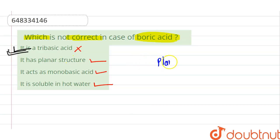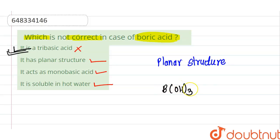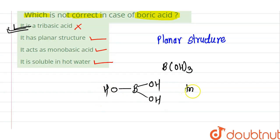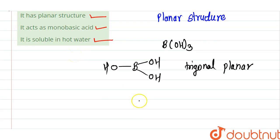Boric acid has a planar structure. The structure of B(OH)₃ shows it has a trigonal planar structure. So the second option — it has a planar structure — is correct.